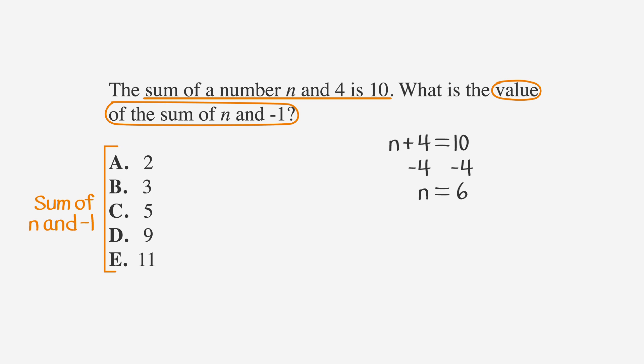For the second equation, we want the sum of n and negative 1, or n plus negative 1. Since we know that n is 6, that becomes 6 plus negative 1, or 5, which is answer choice C.